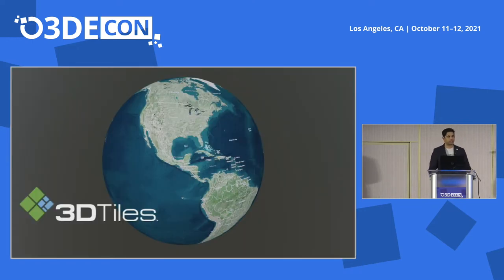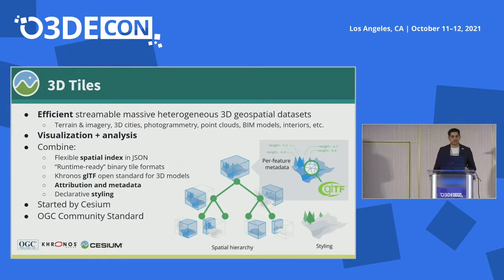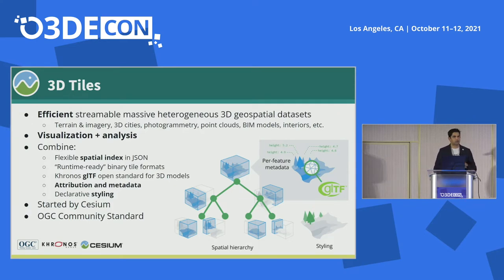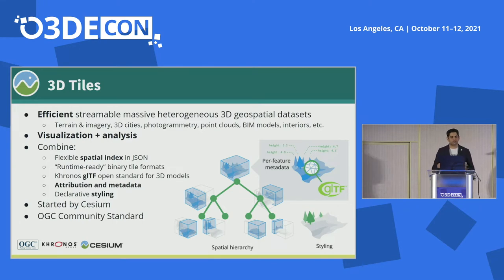Let's take a look at what 3D Tiles actually is. 3D Tiles is an efficient way to tile up and stream heterogeneous 3D geospatial data over the internet and into game engines. We are seeing 3D geospatial data being captured in a variety of ways — whether that's point clouds, meshes, procedural buildings, or 3D cities and terrain and imagery. Being able to stream all of that in a way that's efficient and fast over the wire, but also efficient and fast to render, becomes incredibly important. 3D Tiles defines a spatial index that helps you tile up your data into a form optimized for both of those.